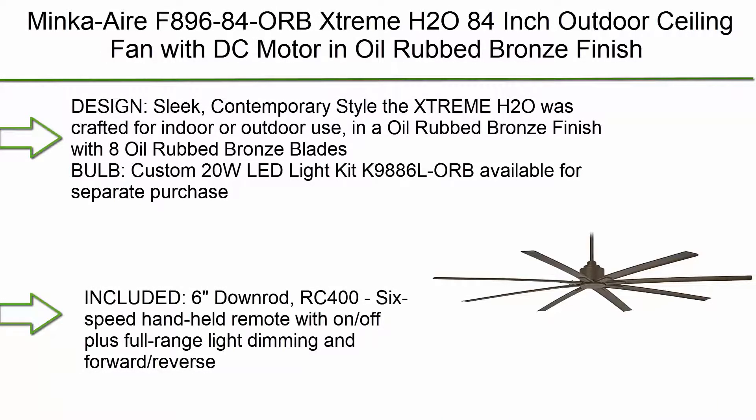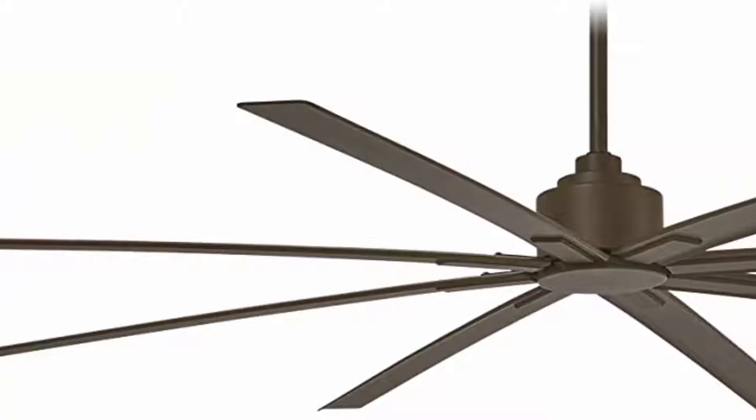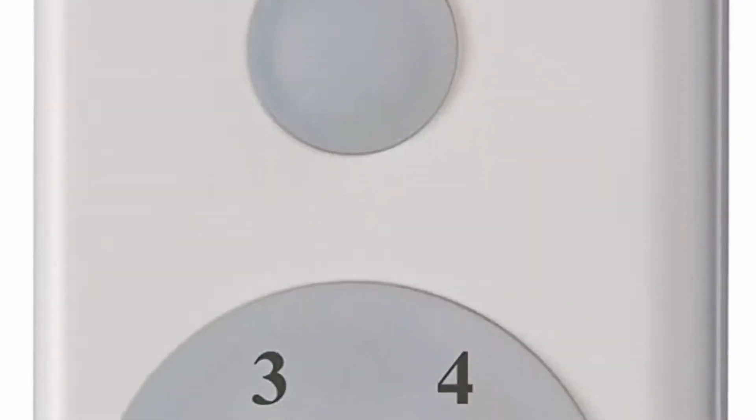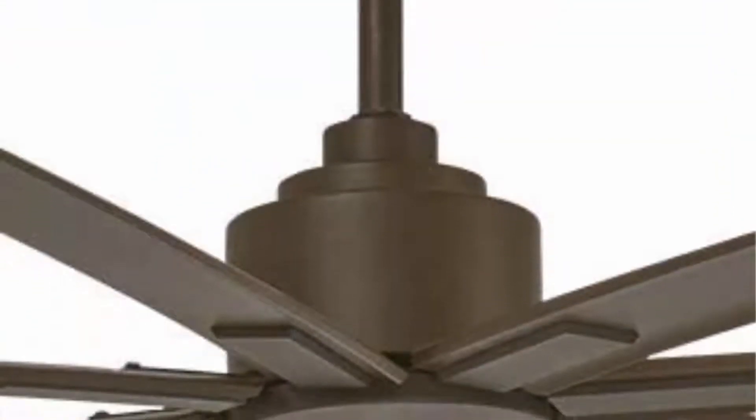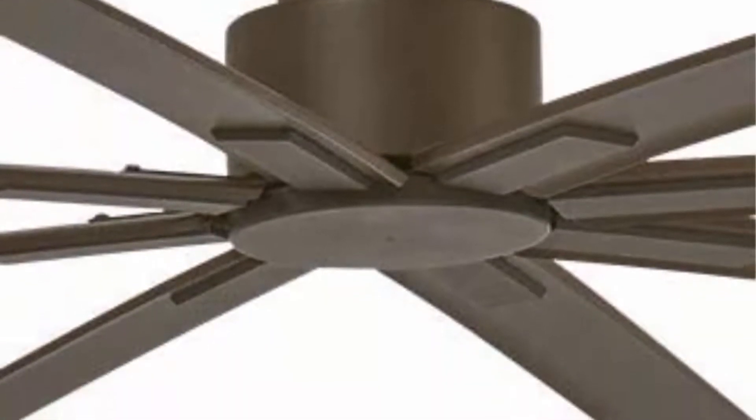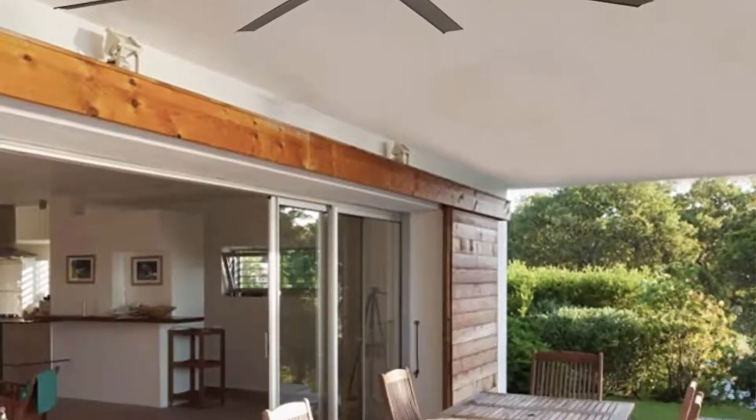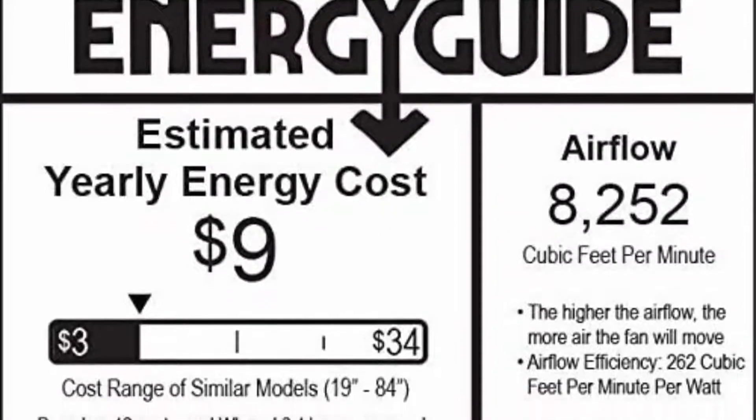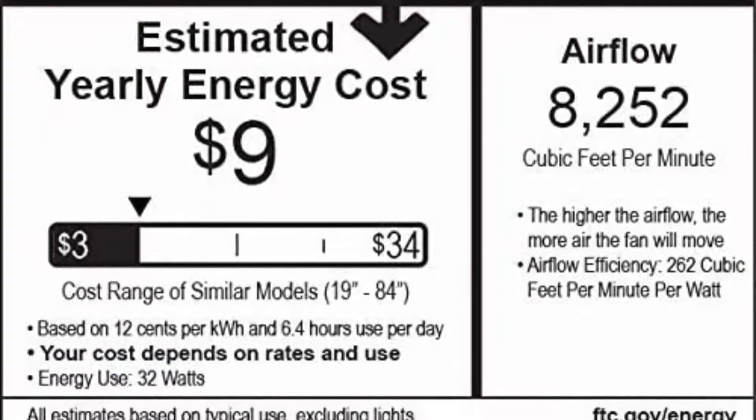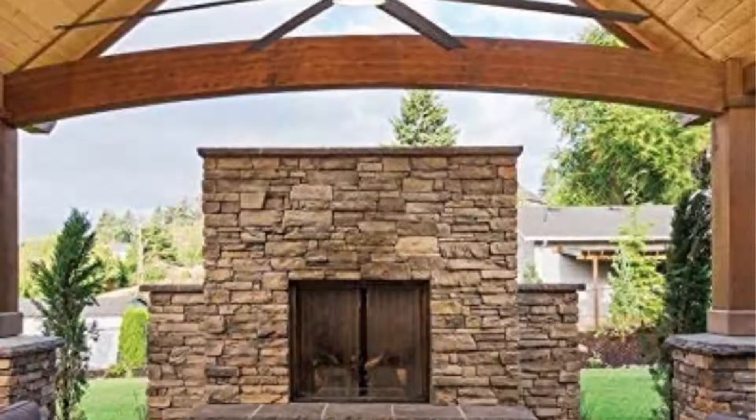Top 8. Minka Air F896-84 ORB Xtreme H2O 84-inch outdoor ceiling fan with DC motor in oil rubbed bronze finish. Design: sleek, contemporary style. The Xtreme H2O was crafted for indoor or outdoor use in oil rubbed bronze finish with 8 oil rubbed bronze blades. Custom 20W LED light kit available for separate purchase. Included: 6 inch downrod, RC400 6-speed handheld remote with on-off plus full range light dimming and forward reverse motor. Conveniently quiet DC motor. Dimensions: measures 13.5 from ceiling to bottom of the fan with the included 6 inch downrod. This contemporary ceiling fan has a blade sweep diameter of 84 with 9 degrees blade pitch. Additional: requires Bondbridge D1000 Hub, sold separately, to work with Alexa.